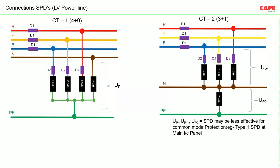As discussed in the last webinar, the actual effective voltage protection level equals UP1 plus UP2 plus the voltage drop across the connecting wires. This we discussed in detail in the last webinar.